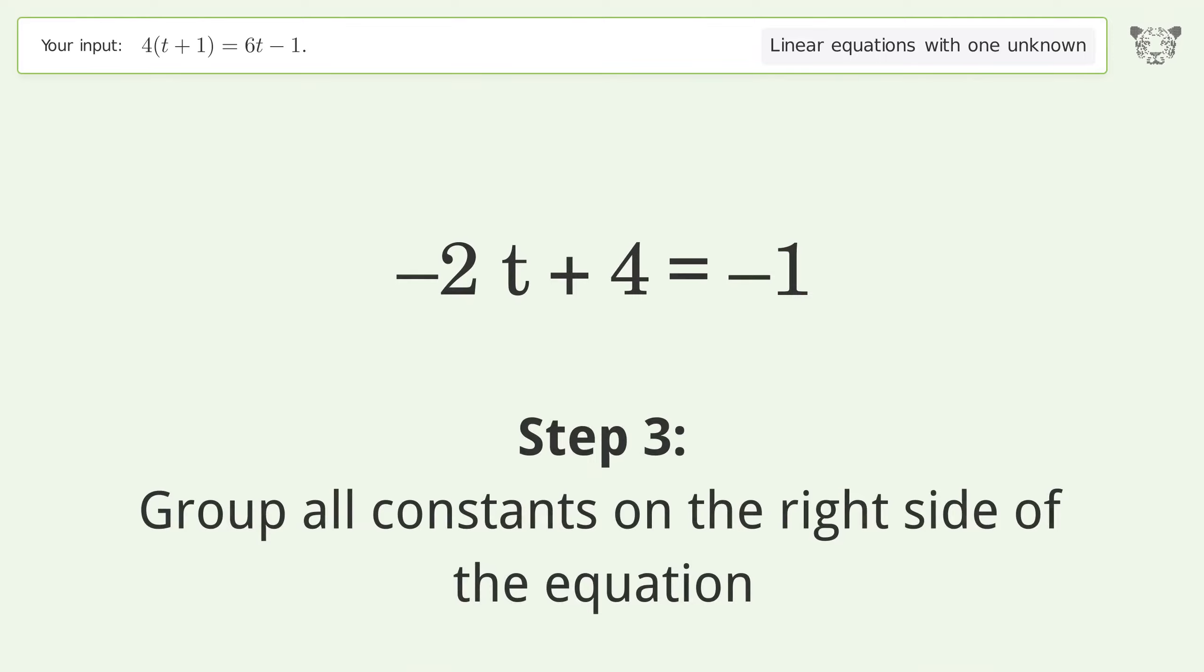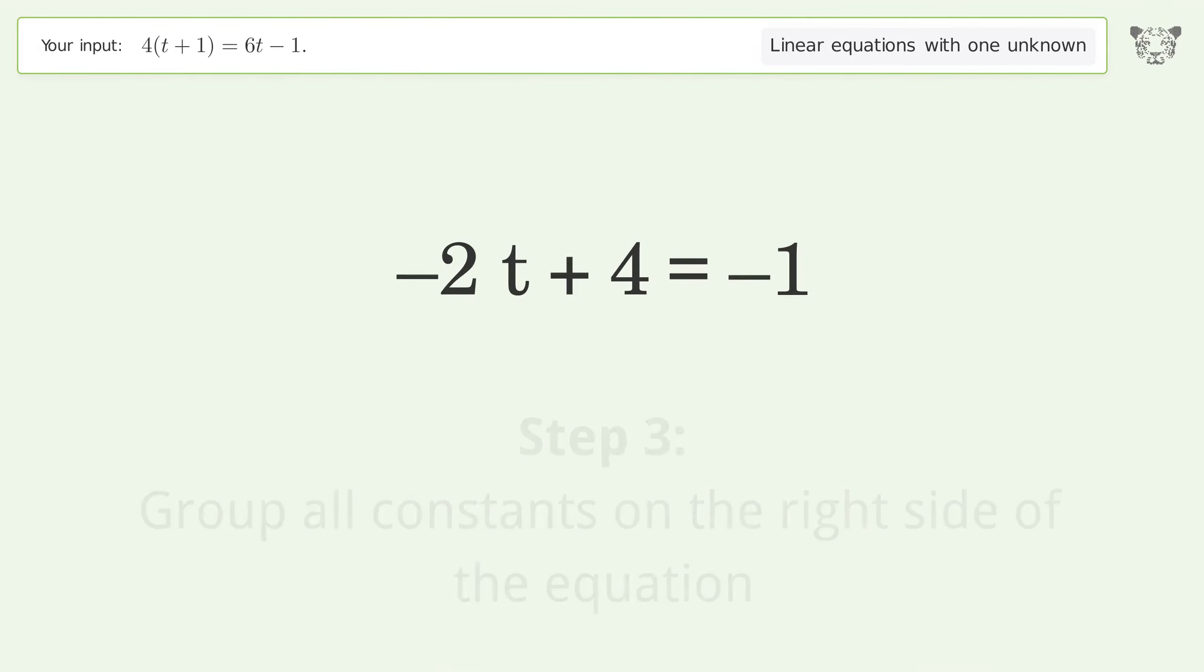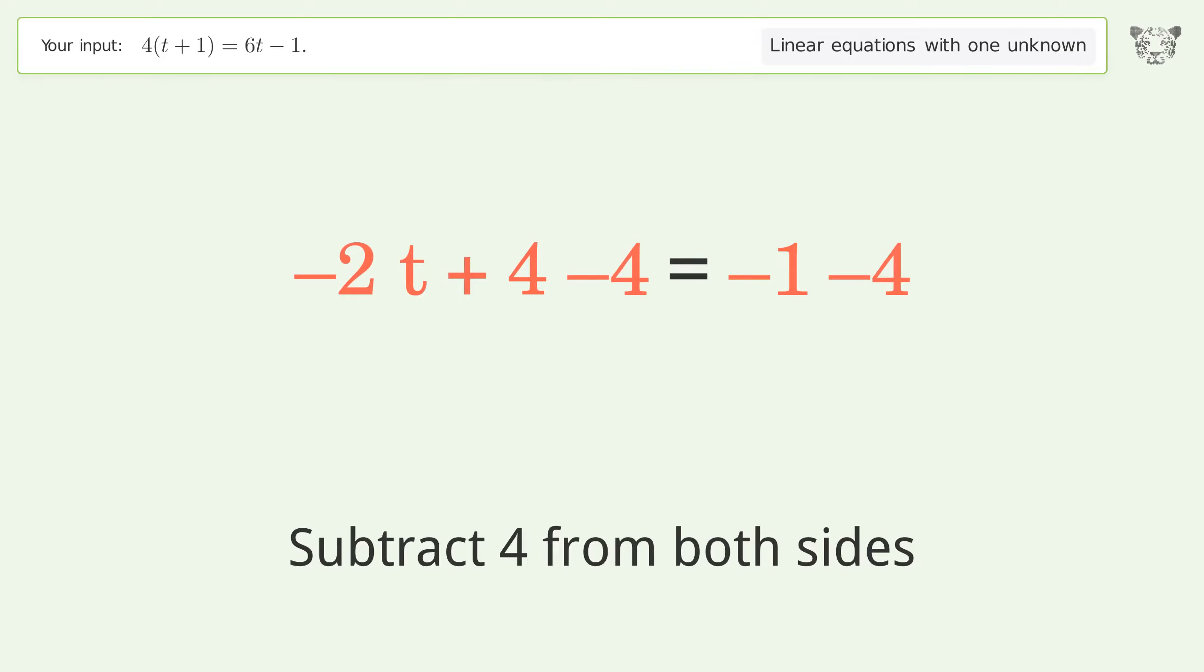Group all constants on the right side of the equation. Subtract 4 from both sides. Simplify the arithmetic.